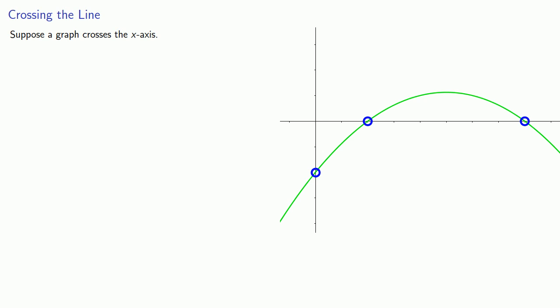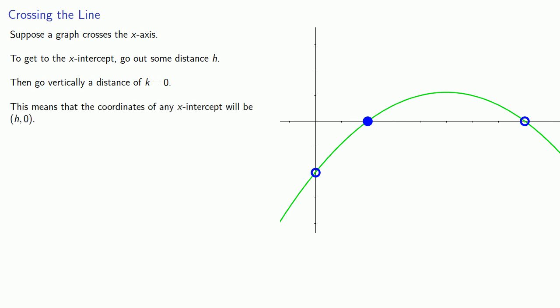So let's take a look at our x-intercepts first. So if I want to get to the x-intercept, what I have to do is start at the origin and go out some distance h. Then go vertically a distance of k equal to 0. And that means the coordinates of any x-intercept will be (h, 0).